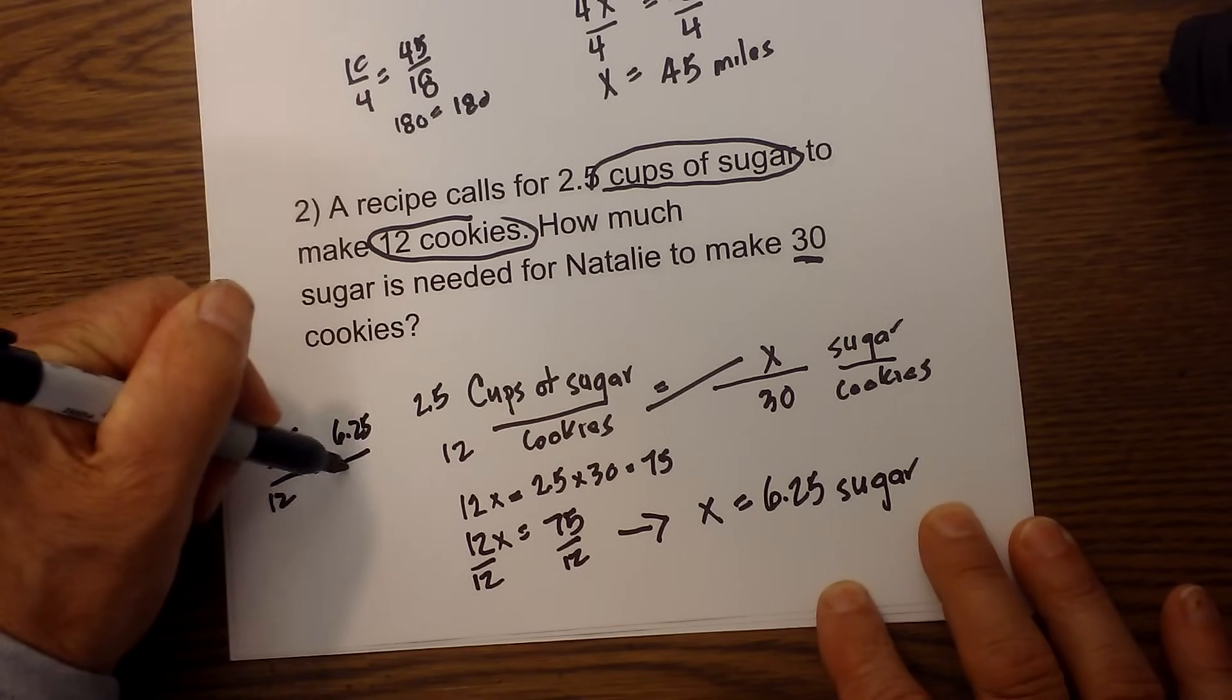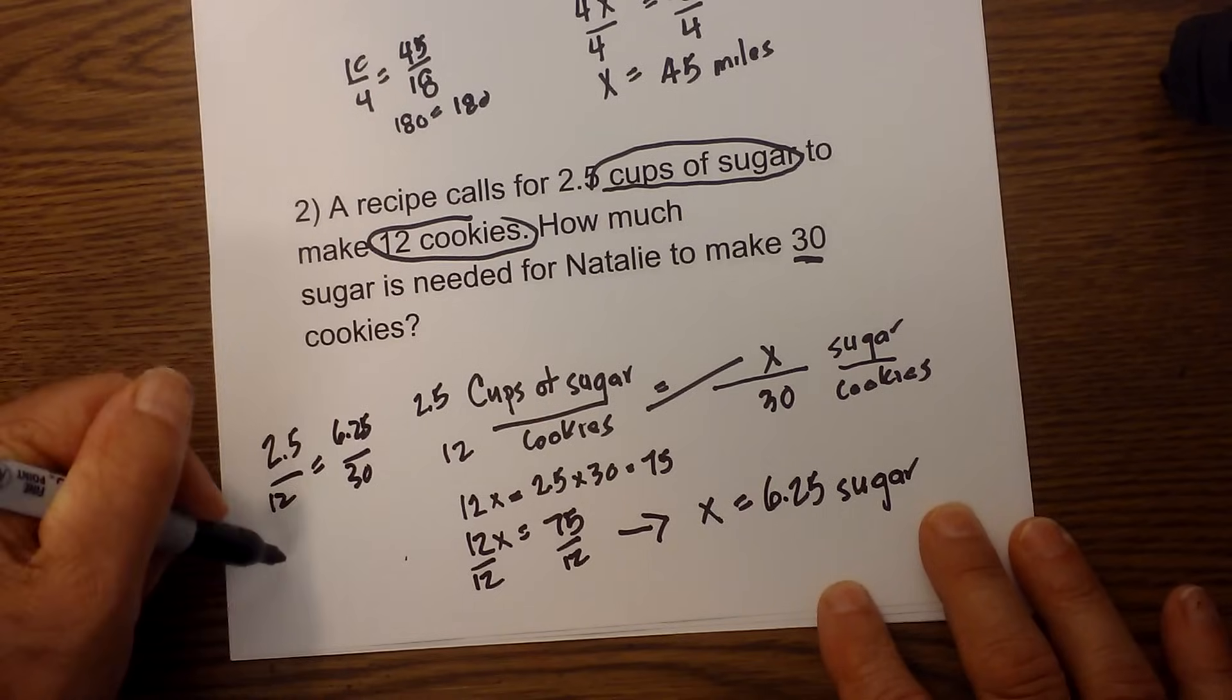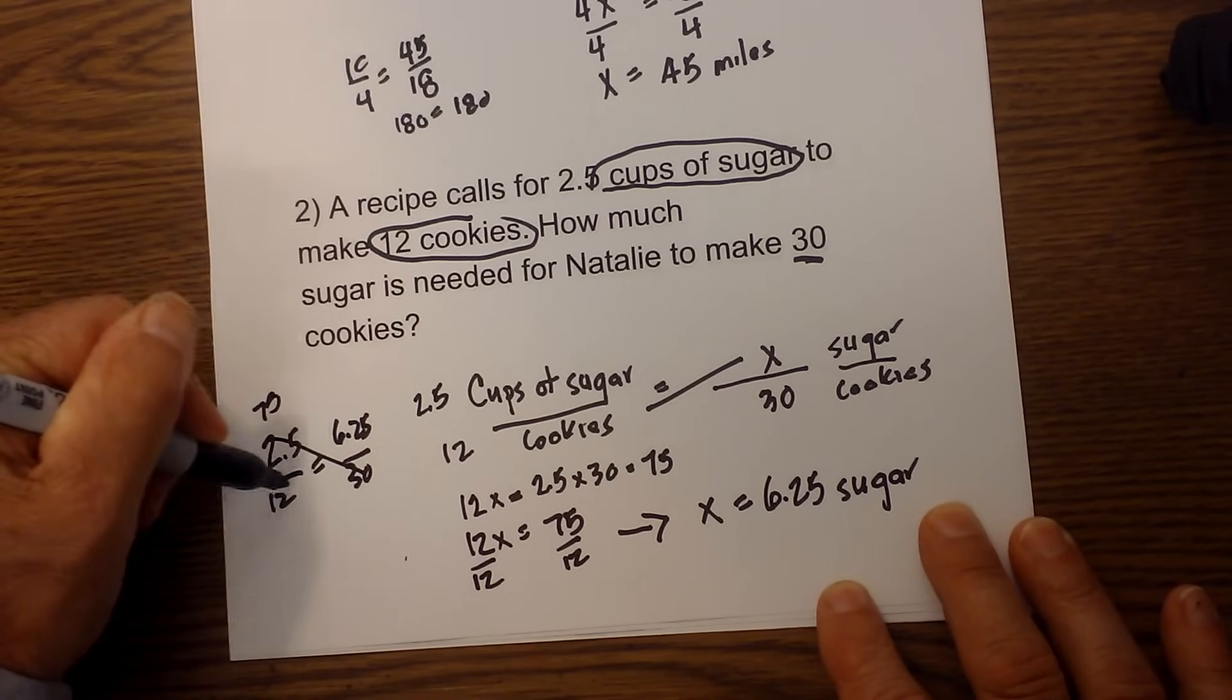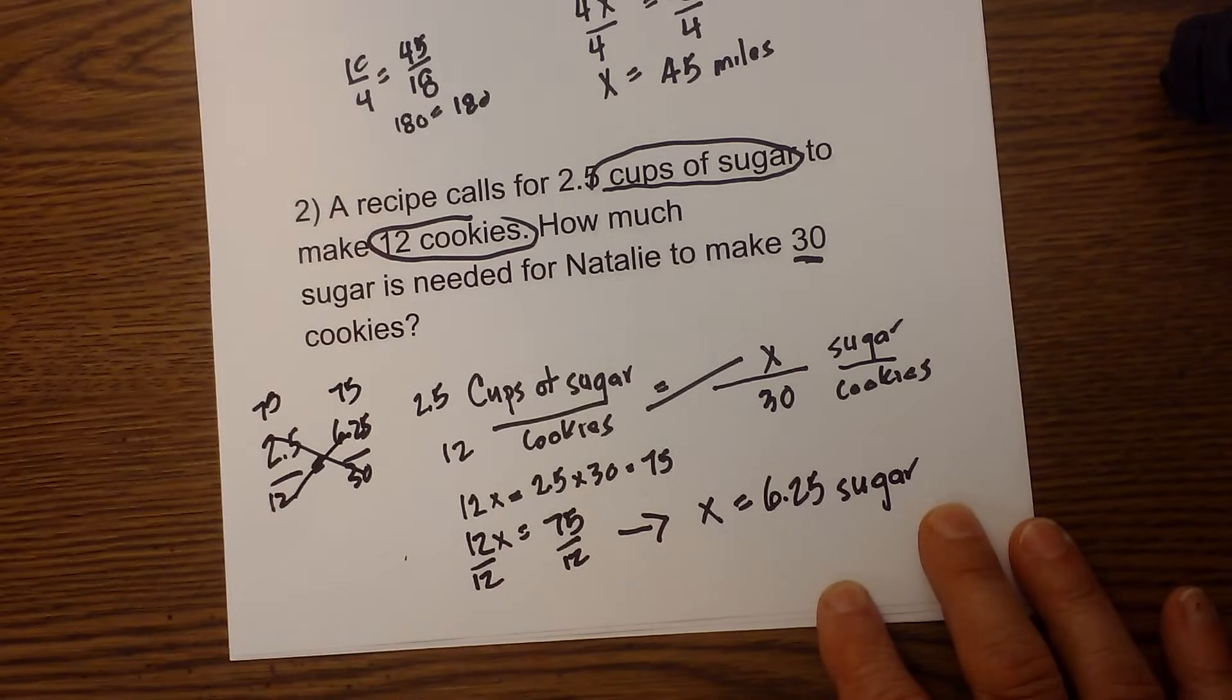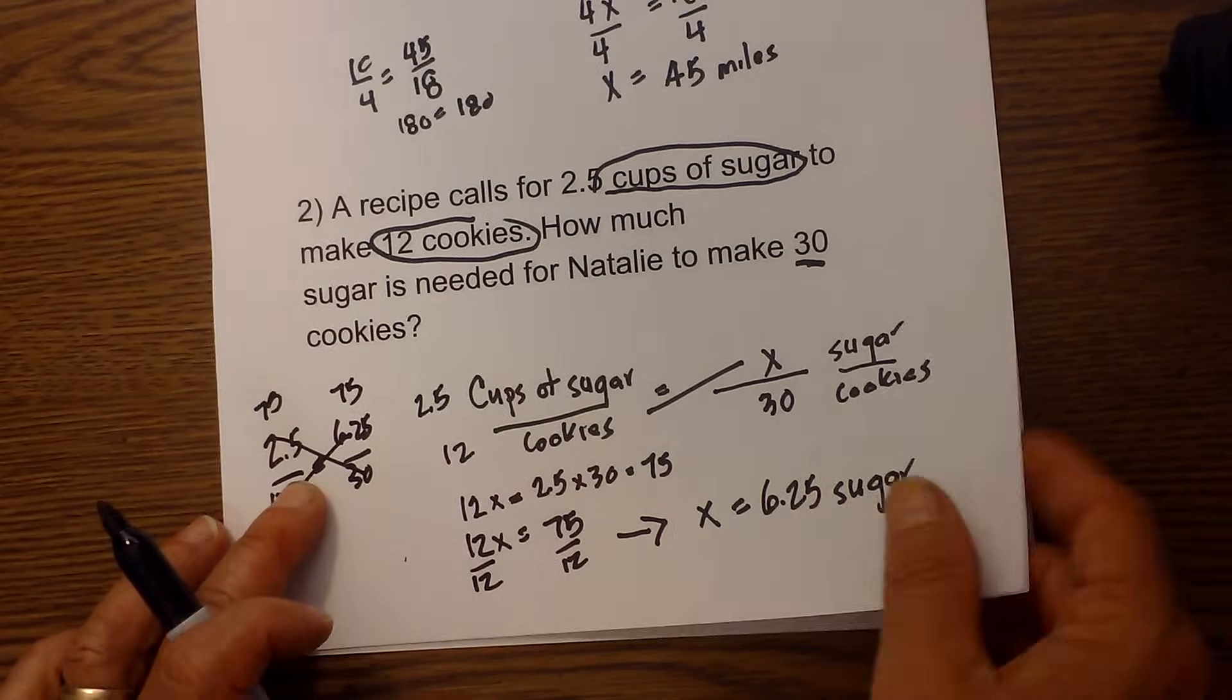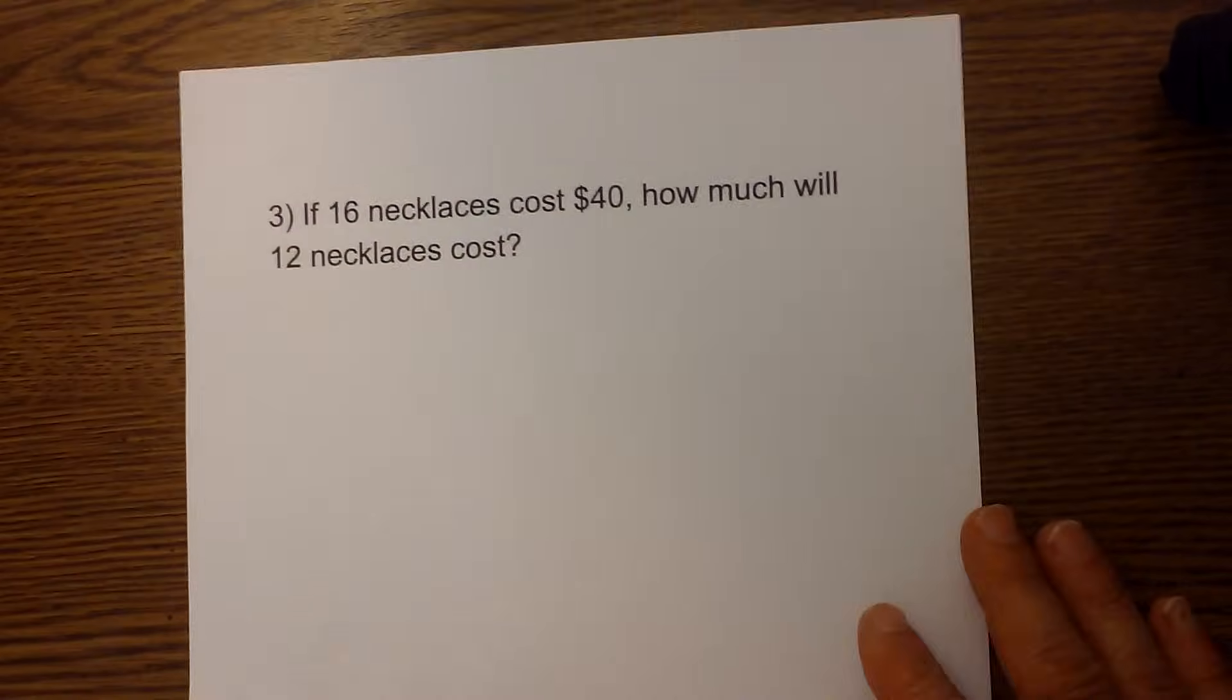Okay, now I will check my work. 2.5 over 12 is equal to 6.25 over 30. 30 times 2.5 is 75, and 12 times 6.25 is also 75. Let me double check that, but I know that is correct. Okay, and finally our last one.